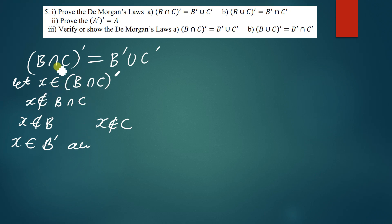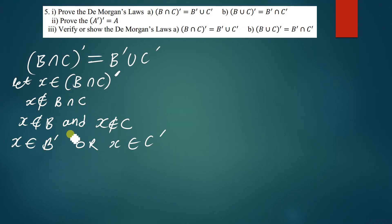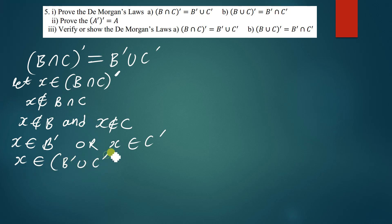So x is not a member of B and it is also not a member of set C. If we say x is not a member of B, it means that x is a member of Bᶜ. So x can be a member of Bᶜ or it can be a member of Cᶜ. If x is a member of Bᶜ or Cᶜ, this implies that x can be in the union set of Bᶜ and Cᶜ. So x is a member of Bᶜ∪Cᶜ.